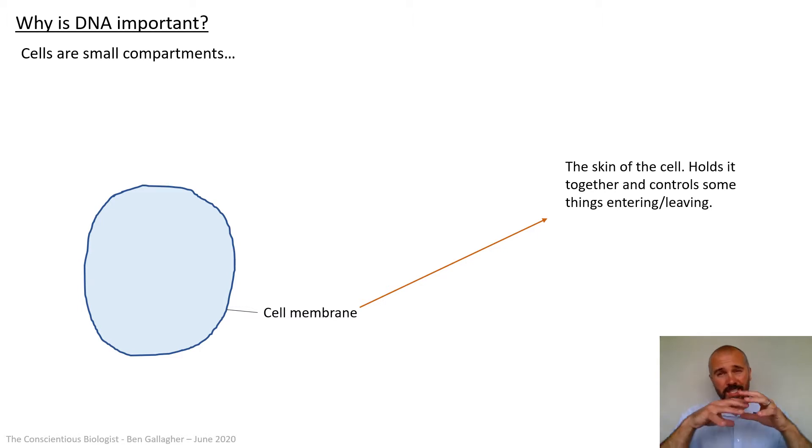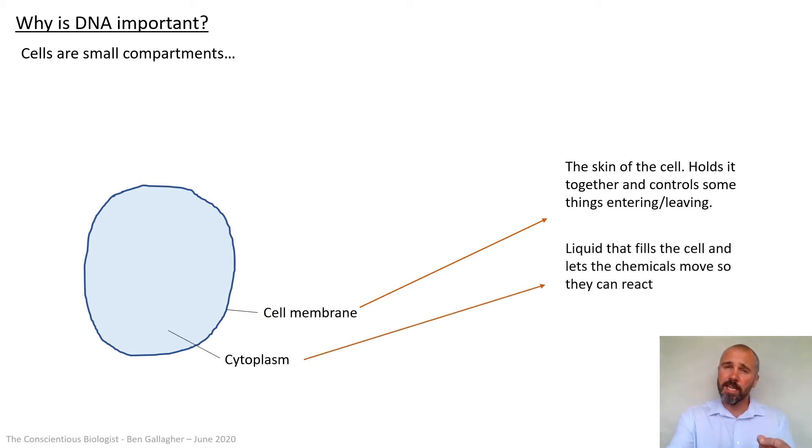You've got the cell membrane, which is the skin of the cell. It holds it together and it controls some of the things that can come in and out by diffusion, by active transport. And you've got the cytoplasm, which is the liquid that fills up the cell. And it creates an environment, a 3D environment in which all the chemicals can move around and interact so a cell can have metabolism. But essentially, that's all a cell is. It's this enclosed compartment.